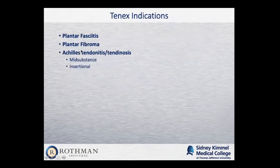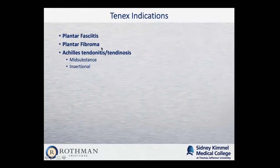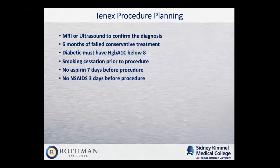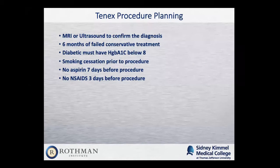The general indications for the Tenex procedure are plantar fasciitis and Achilles tendonitis or tendonosis — both in the middle of the tendon and where it inserts to the heel bone. Plantar fibromas is another place where we can use Tenex as well, and those are abnormal growths that can occur in the substance of the plantar fascia. Before we do the Tenex procedure, I'll generally order an MRI or an ultrasound to confirm the diagnosis and look at the quality of the tissue to see how inflamed it is. Generally, anyone who has failed six months of conservative treatment would be a potential candidate. If you are diabetic, your hemoglobin A1C must be below eight because we don't want any potential risks or complications like infection.